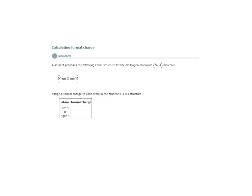How do we determine formal charge? The formal charge of an atom is going to be equal to the number of valence electrons that that atom has, minus the number of lone pair electrons, minus half of the bonding pair electrons.